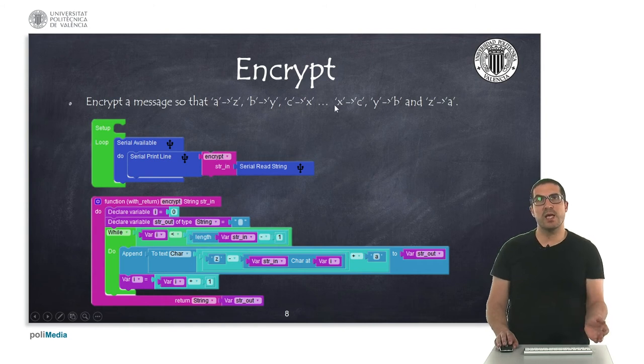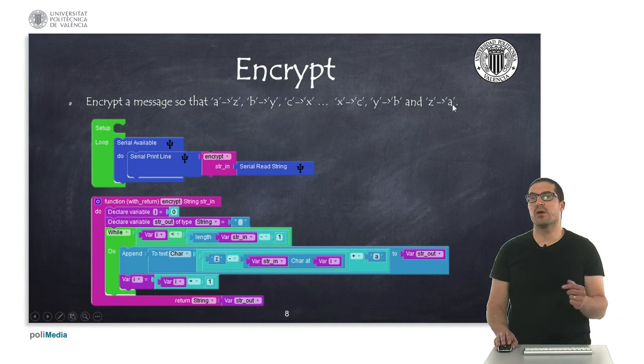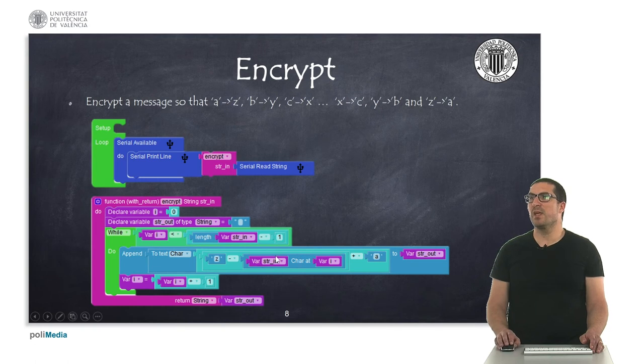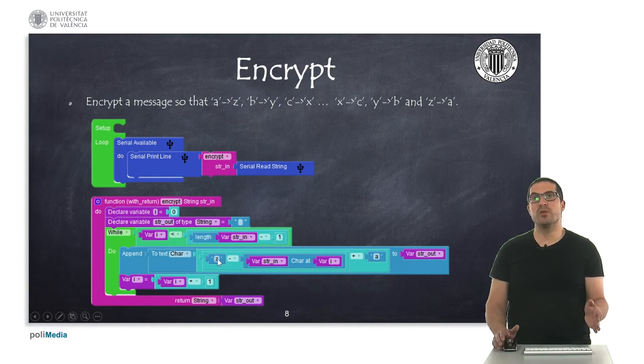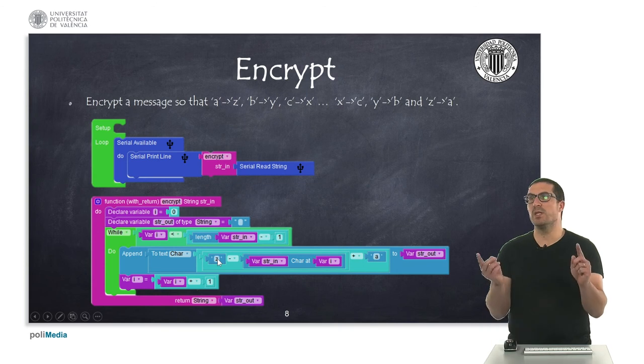And obviously the X is encoding to C, Y is encoding to B, and Z is encoding to A. This is actually what I'm doing here. What I'm doing is getting the specific character at the position i of my string. And then what I'm doing is an operation which is basically doing this encryption.